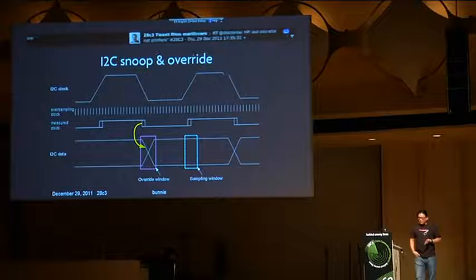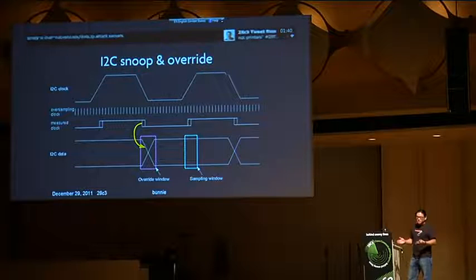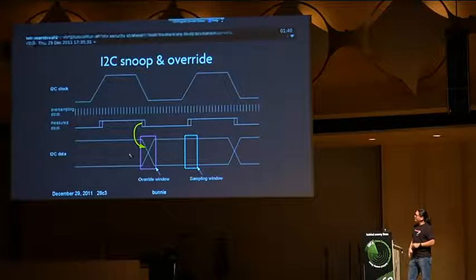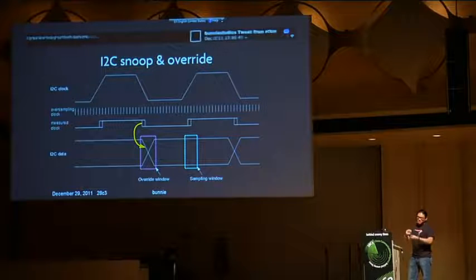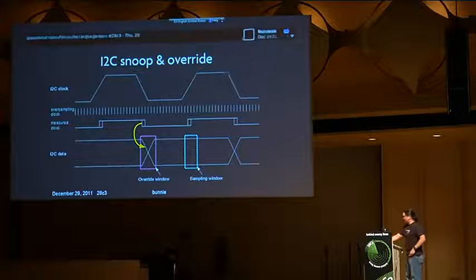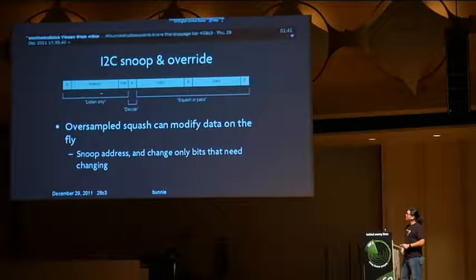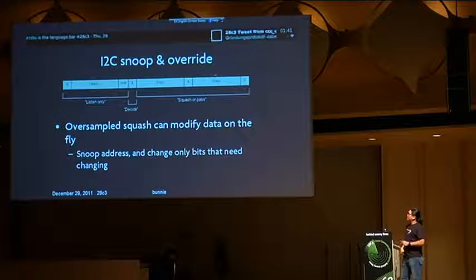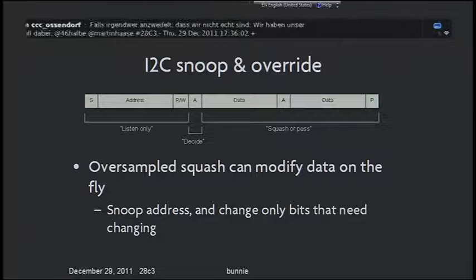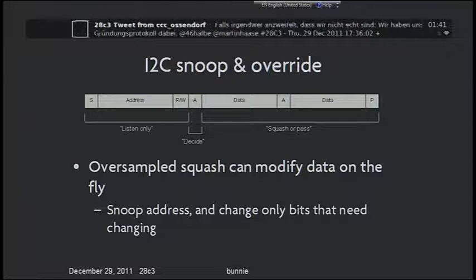In order to do the snoop and override, the implementation uses a highly oversampled I²C implementation. I²C itself is very slow — 100 kHz clock. We oversample at 26 MHz. Whenever the clock transitions, we have a small window where we can say we didn't want a zero, we want a one, and we switch around so that by the time the next edge comes at the sampling window, the data is what we want it to be. At the protocol level, we're listening at the address phase and decide on the acknowledge bit whether to override the data — selectively rewriting only the bits that need changing, for example squashing 3D capability during the monitor identification protocol.